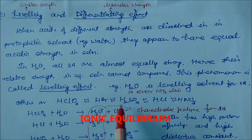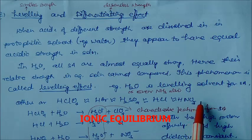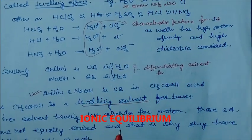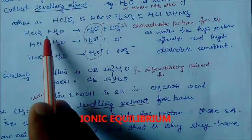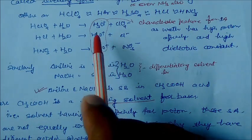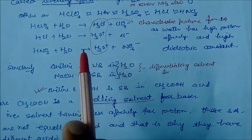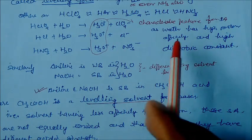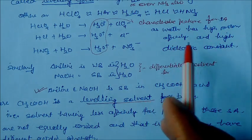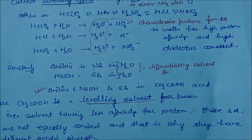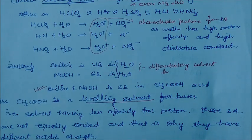Strong acids like HClO4, HBr, H2SO4, HCl, and nitric acid all have almost equal strength to each other. For example, HClO4 plus water gives H3O+ and ClO4−. This is the characteristic feature of the reaction. Water acts as a leveling solvent because it has high proton affinity and high dielectric constant, which is why these acids show the leveling effect.